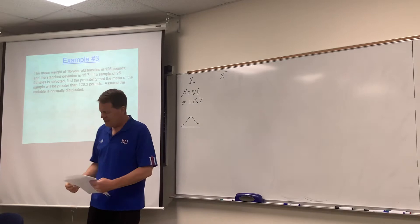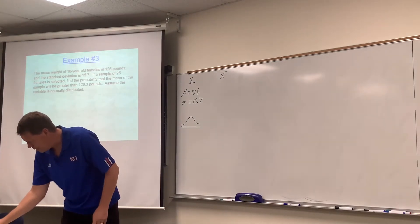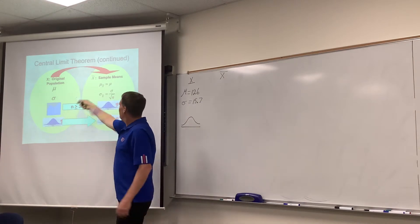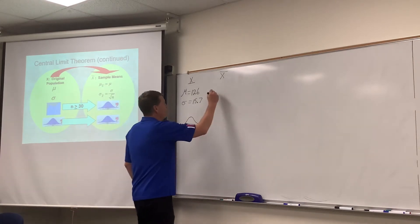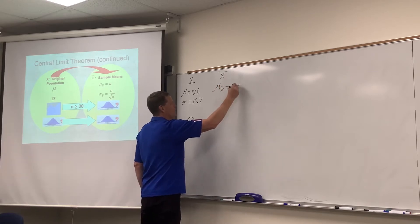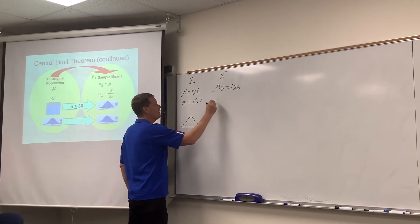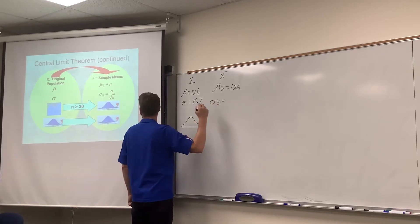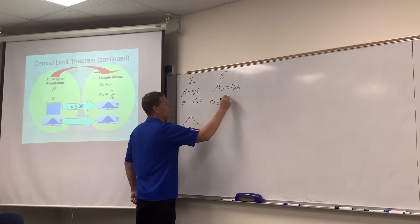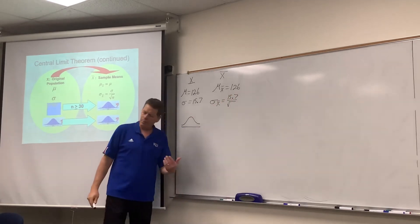So indeed, this does become a situation where we will apply the central limit theorem. We're jumping over to the mean of a sample. So the mean for this distribution would equal the 126, just like the other. But the standard deviation has changed. It will be that 15.7 from the original divided by the square root of the sample size.